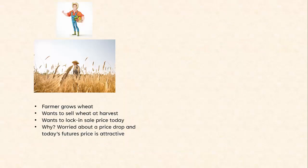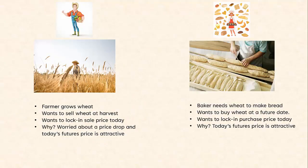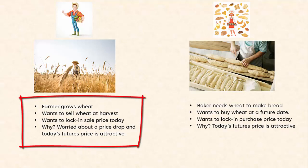In this video, we'll work through a hypothetical example of a farmer who trades with a baker. The farmer grows wheat, wants to sell wheat at harvest, and wants to lock in the sale price of that wheat today. The farmer is worried about a price drop, and today's futures price is attractive.